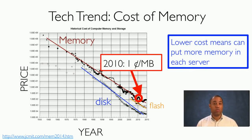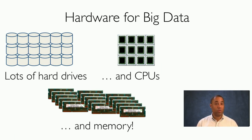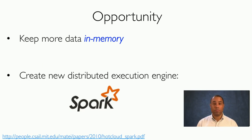Technology trends show that the cost of memory is dropping. A log-linear graph with year on the x-axis and price on the y-axis shows that memory is dropping exponentially over time — in 2010 it cost only one cent per megabyte. Cheaper memory means we can put a lot more memory in each server. So now the hardware we have for big data includes lots of hard drives, lots of CPUs, and lots of memory. This gives us an opportunity: we can keep more data in memory instead of writing it out to slow disks and then having to read it right back in.